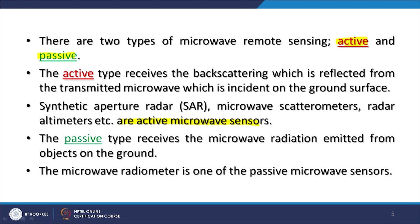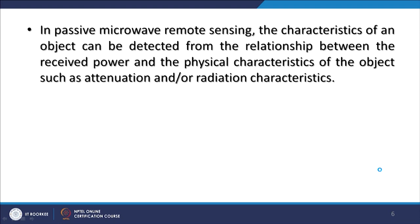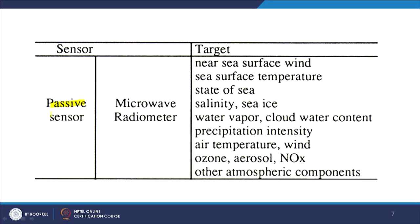The microwave radiometer is one of the passive microwave sensors in this category. In passive microwave remote sensing, the characteristics of an object can be detected from the relationship between the received power and the physical characteristics of the object, such as attenuation or radiation characteristics. This relationship is exploited by passive microwave sensors.